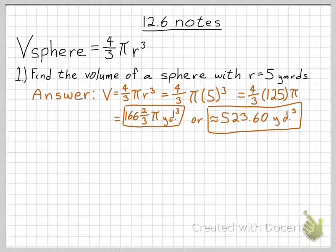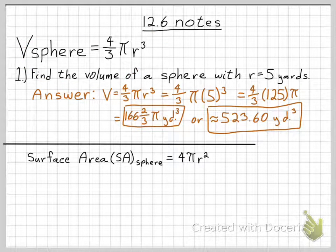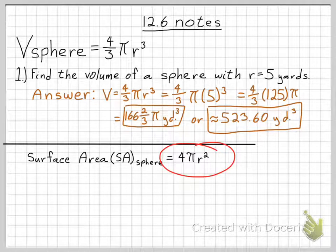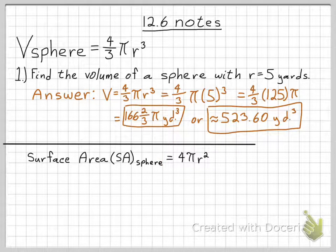And you will also be responsible for the surface area of a sphere. And the formula for the surface area of a sphere is 4 pi r squared. Again, where r is the radius of the sphere.